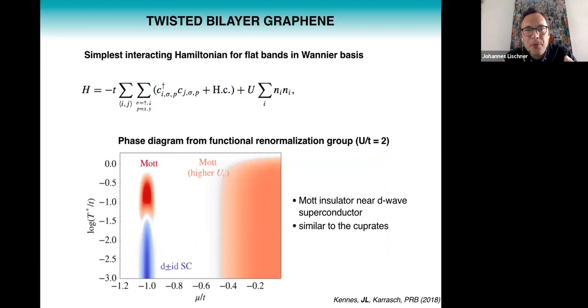So with that knowledge we can start to construct some simple Hamiltonians for the flat bands. This is probably the simplest one where you just allow hopping from adjacent flat band Wannier functions and you add an on-site Hubbard interaction term. Then you can use techniques like the functional renormalization group to calculate the phase diagram. So here's the result of this work where we have on the x-axis the doping, on the y-axis temperature. And you see that at half filling we do find a superconducting dome in the vicinity of a Mott insulator state. So there's the strong similarity to the cuprates that we find in these calculations. We just picked u over t equals 2.